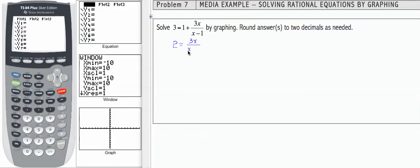So y1 is going to be 2, and y2 is going to be 3x over x minus 1. I'm going to set that up here in my y equals list on the left-hand side.